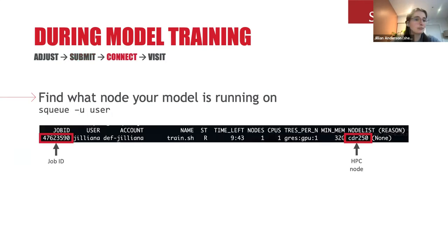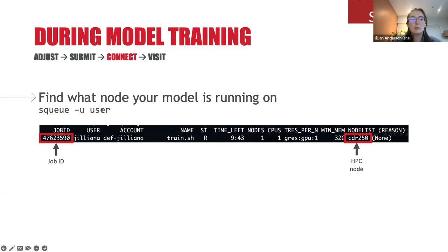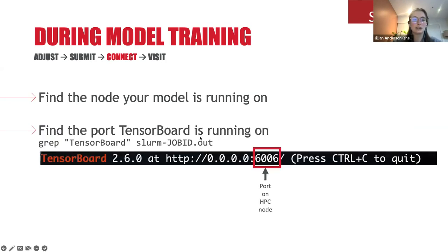Once your job has begun, you'll probably receive an email. You can hop back onto Cedar or Graham and the first thing you need to do is figure out what node your model is running on — this helps us connect to TensorBoard. To do that, run the squeue command specifying your username, which shows what jobs you have running. In this case, I have one job running on cdr250 on the Cedar cluster. We also note our job ID.